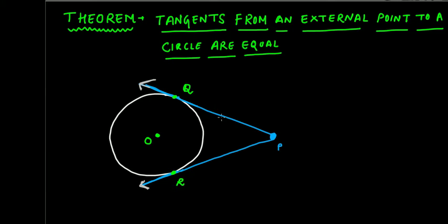Length means the distance between the starting point and the point of contact. So for that, first we'll draw the figure. Here we have a circle with center O, and an external point P from which we are drawing two tangents to the circle, PQ and PR.